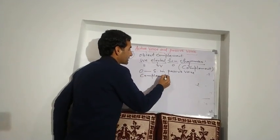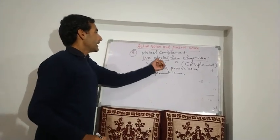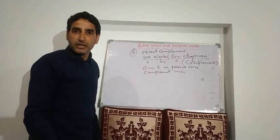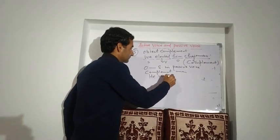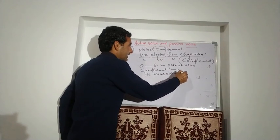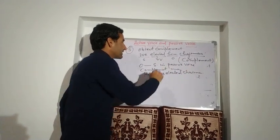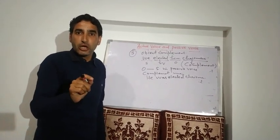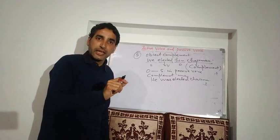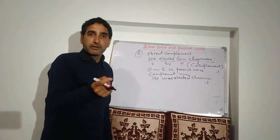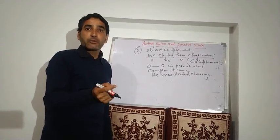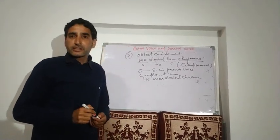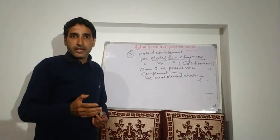So 'We elected him chairman' becomes 'He was elected chairman' — 'him' changes to 'he' and 'chairman' remains unchanged. Likewise, 'They kept me waiting' — 'me' does not have complete meaning alone, so 'waiting' is the complement. The passive voice is 'I was kept waiting.' We shall discuss other similar sentences next time. Thank you.